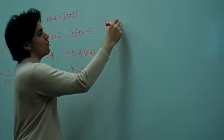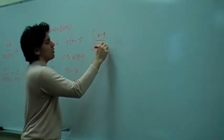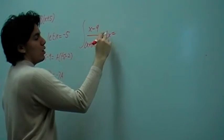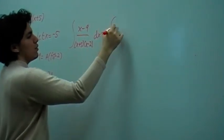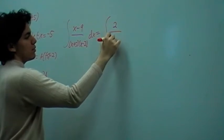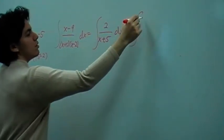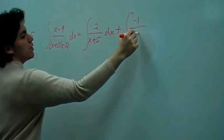now we're going to rewrite the problem we started with using what we solved for A and B. We're going to have our new integral, 2 over (x plus 5) dx plus the integral minus 1 over (x minus 2) dx.